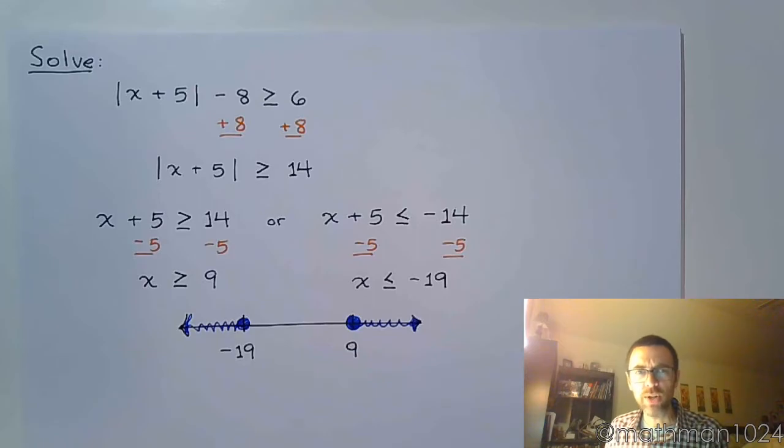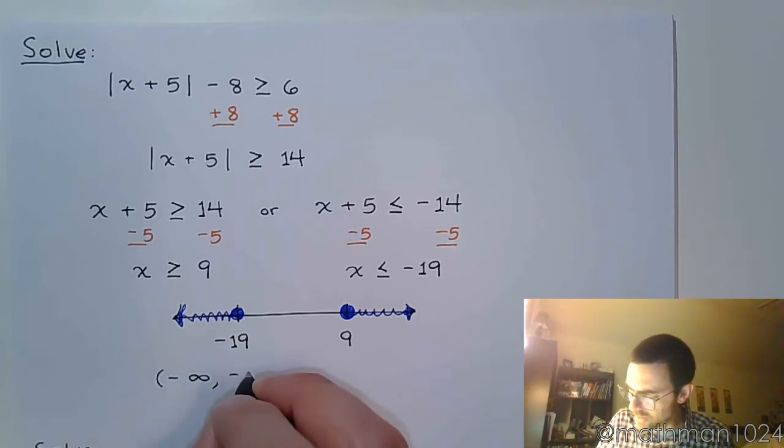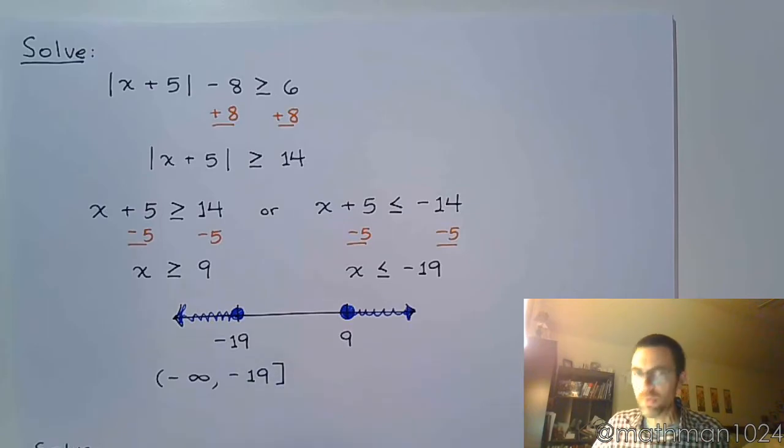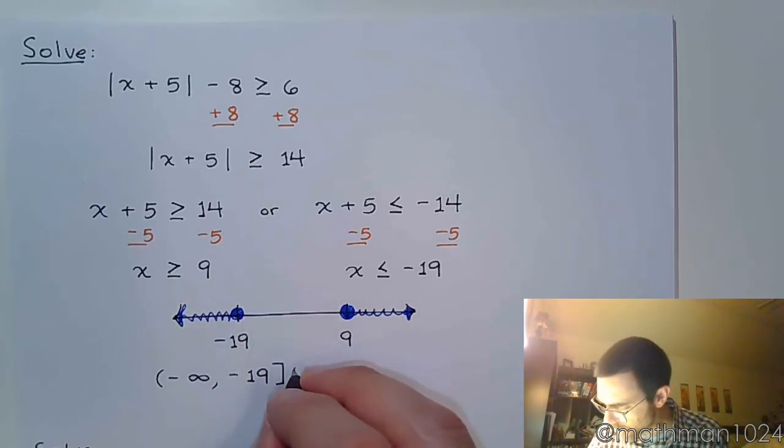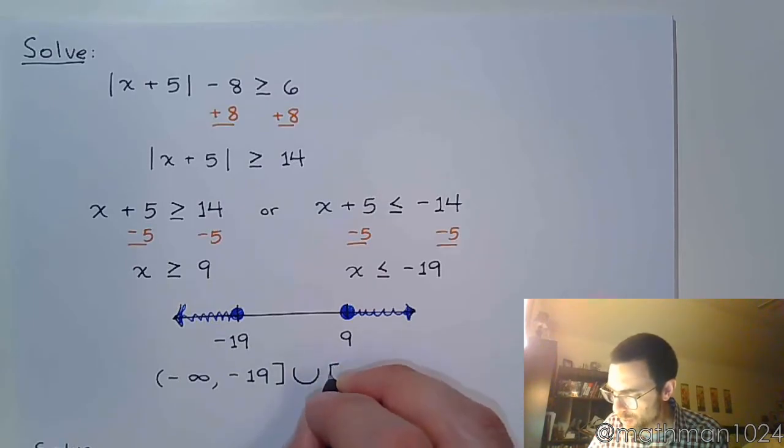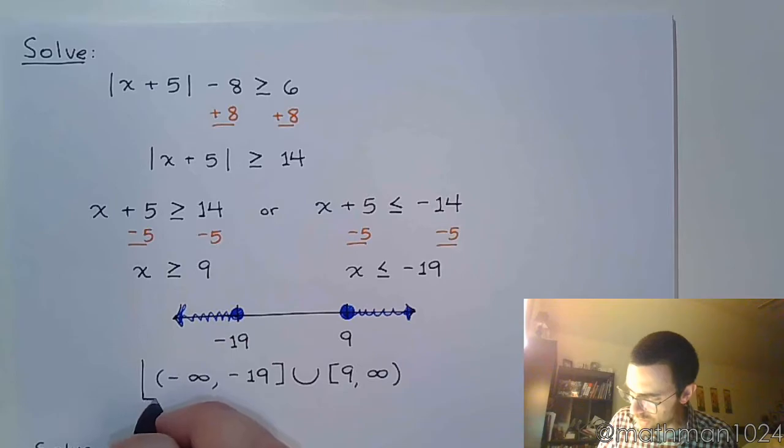Now we write our answer using interval notation. We're going from negative infinity to negative 19, bracket on negative 19 because we are including that. You've got the gap right here so we're going to use the union sign. We pick back up with a bracket for 9 to infinity.